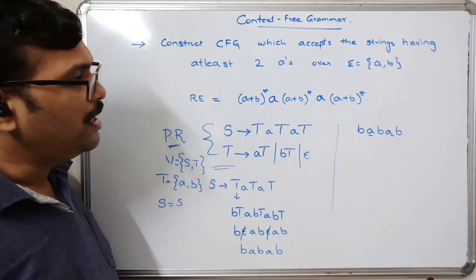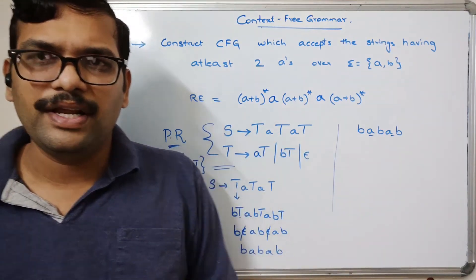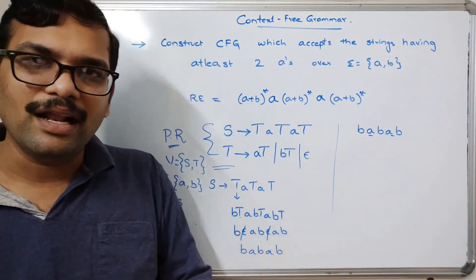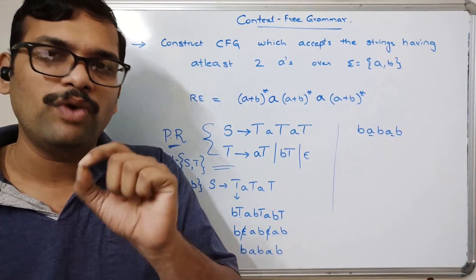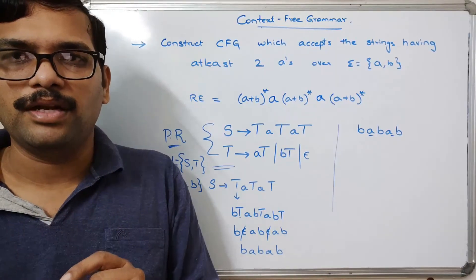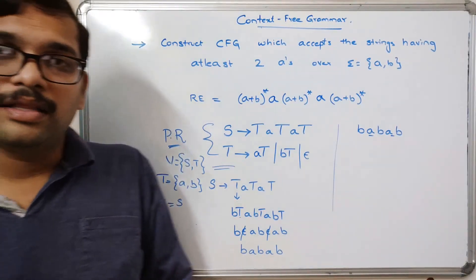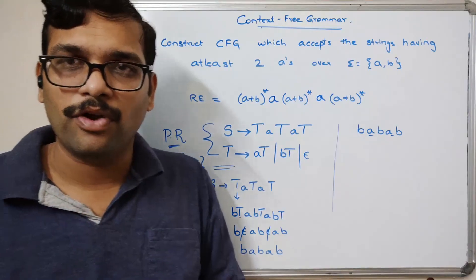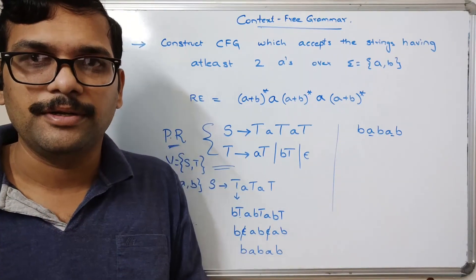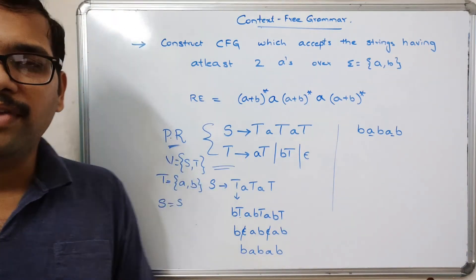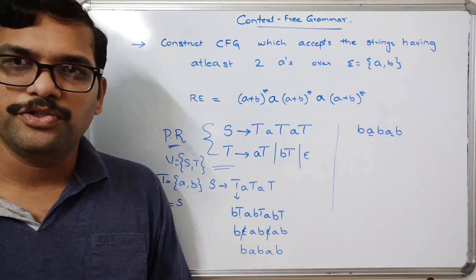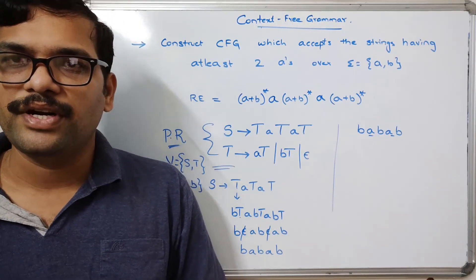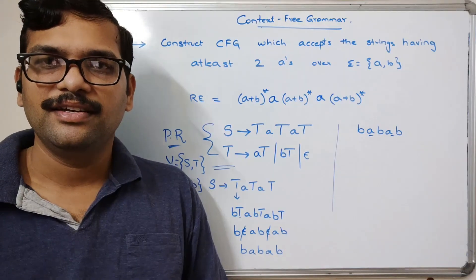The only difference between regular grammar and context free grammar is in the production rule. In regular grammar, the right hand side must have one non-terminal followed by one terminal. But in context free grammar, the right hand side can have multiple terminals and multiple non-terminals with no restriction on count. Hope you understood this session — post any doubts in the comment section, like, share, and subscribe. Thank you.